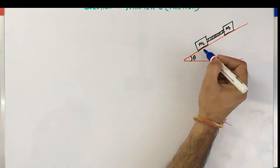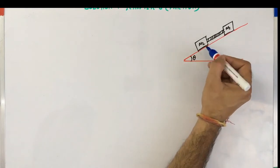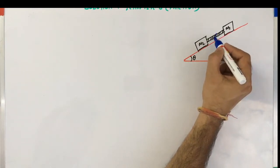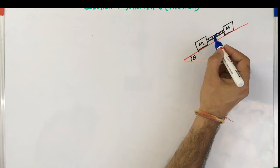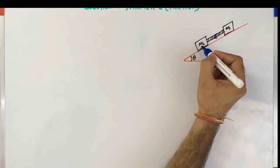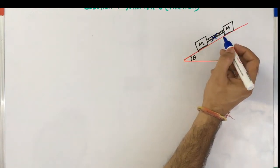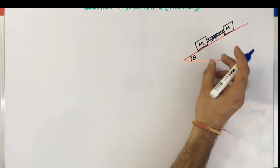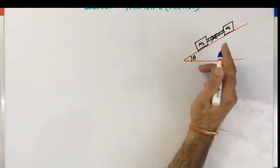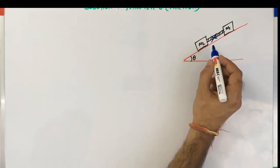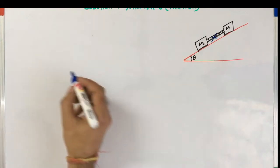So when they slide down, there will be a tension, or the force exerted by the rod on the M2 block as well as on the M1 block. We will observe each block using the free body diagram and try to solve this problem.